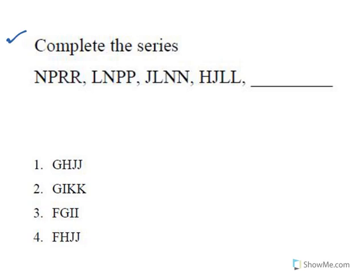Moving to the next one — these kinds of questions are known as verbal reasoning. Alphabetical series are given. The first one is NPRR. We look for any relationship from one alphabet to another. After N comes O, which is omitted, and the next alphabet P is given. After P comes Q, which is omitted, and the next alphabet R is given. R is repeated. So the pattern is: one alphabet is skipped, and the next one is repeated.